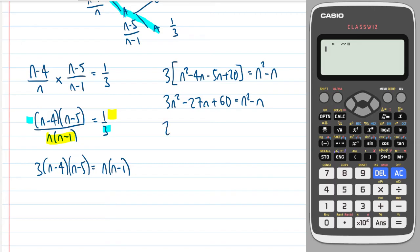Bringing it all over to one side. So subtracting the n squared and adding on an n will give me minus 26n plus 60 equals zero.